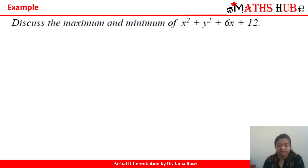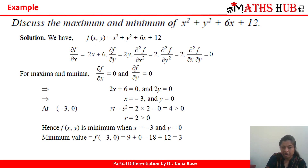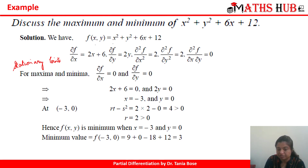The first question asks us to discuss the maximum and minimum of the function f(x, y) = x² + y² + 6x + 12. According to the working rules, we first calculate the derivatives: ∂f/∂x = 2x + 6, ∂f/∂y = 2y, ∂²f/∂x² = 2, ∂²f/∂y² = 2, and ∂²f/∂x∂y = 0. Putting the first order derivatives equal to 0 gives 2x + 6 = 0 and 2y = 0, which implies x = -3 and y = 0.